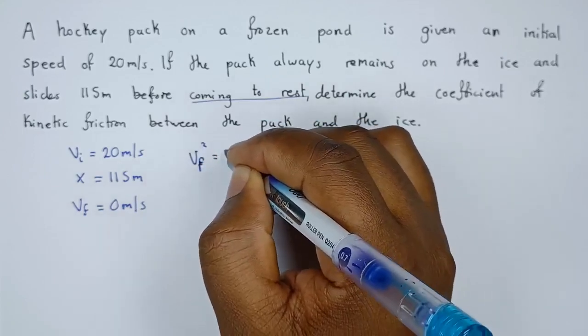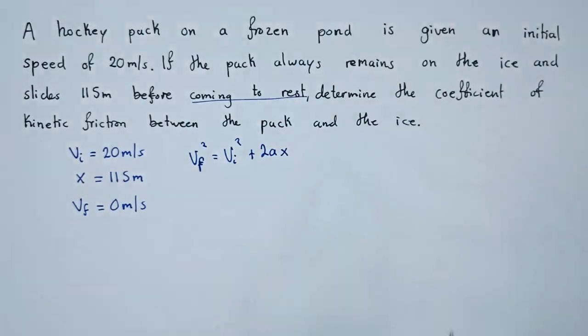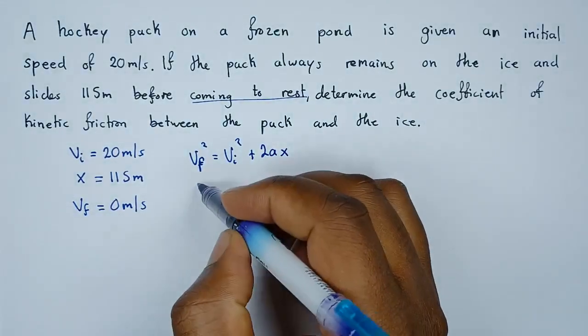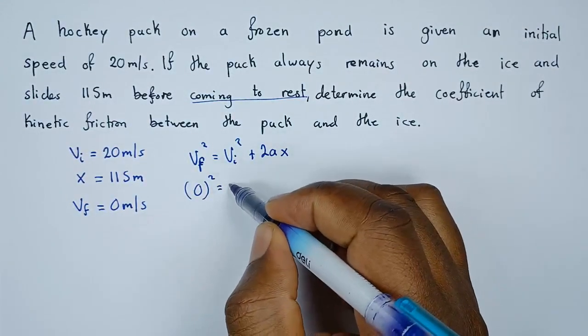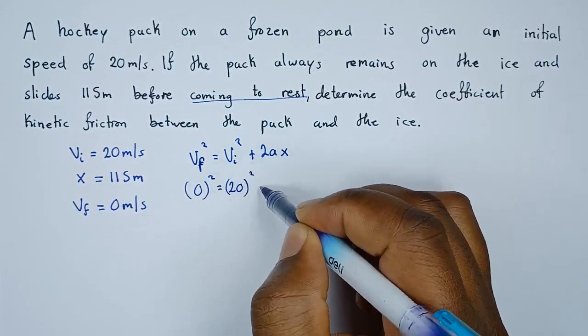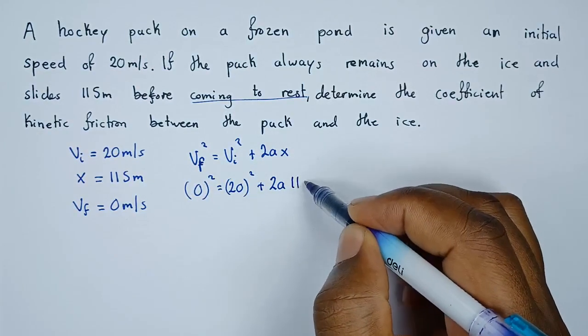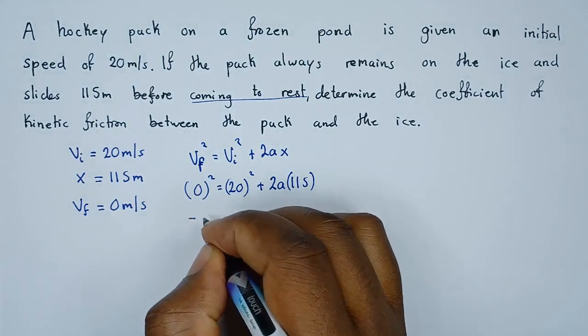So the final velocity we've been given is 0, initial velocity is 20 squared, plus 2a, the displacement is 115. So 2 times 115 is 230, so we can cross, the 0 squared comes to the other side hence it becomes negative. Negative 230a which equals 20 squared is 400.